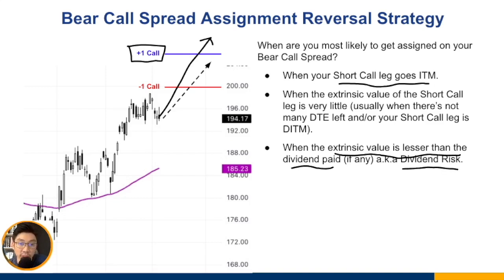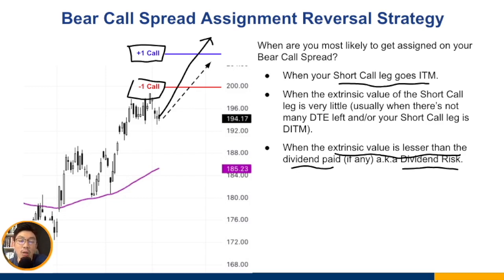This is what you call dividend risk. For the bull put spread, because you are doing the short put, there is no dividend risk. But for the bear call spread, there is dividend risk because the buyer of the call option — now you are short the call — can choose to exercise his call option and get long 100 shares. The reason he might want to do that is because the stock could be paying a dividend that is much more than the extrinsic value of the call option he's holding.